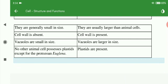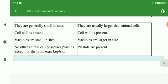In animal cells, vacuoles are small in size, whereas vacuoles are larger in size in plant cells. No animal cell possesses plastids except for the protozoan Euglena, whereas plastids are present in almost all plant cells.